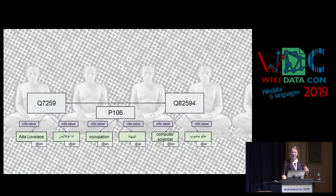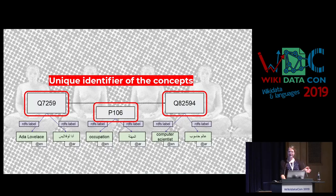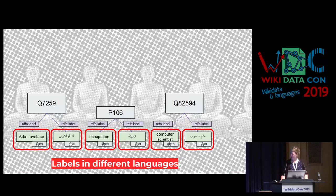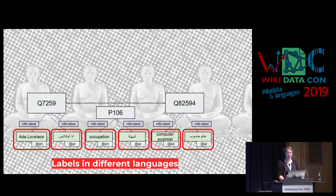So just a quick rerun: why is Wikidata so cool for low-resource languages? We have those unique identifiers, and we have labels in different languages — those can be in over 400 languages by now. So we have a good option here to reuse language in different forms and capture it.